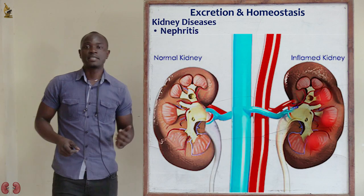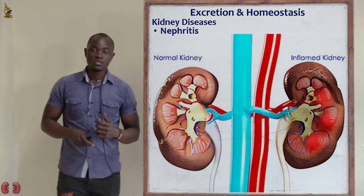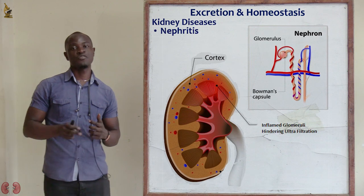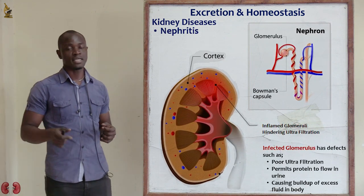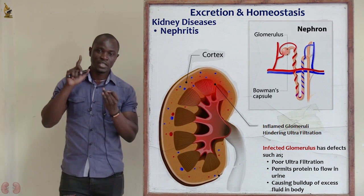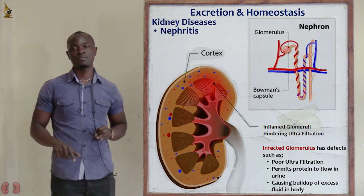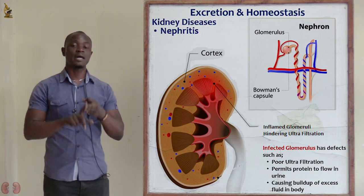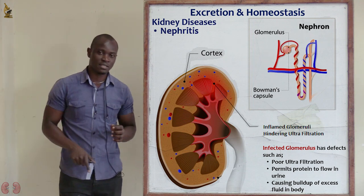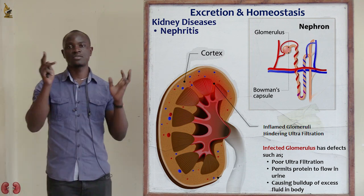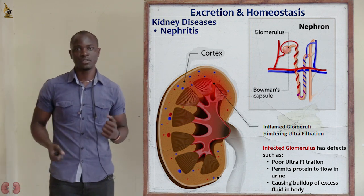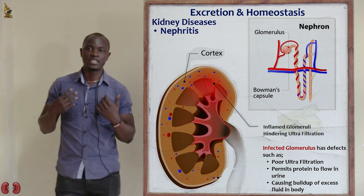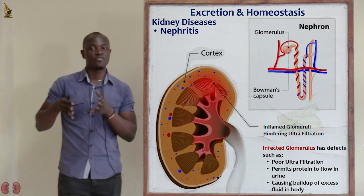The next disease is nephritis. Nephritis basically involves the glomerulus — it is an infection and inflammation of the glomerulus of the kidney. If the glomerulus is affected, ultrafiltration will be impaired. Normally there is no protein or blood cells in urine, but in nephritis, since the glomerulus is affected, all these disorders come about — blood cells and proteins may be found in the urine.